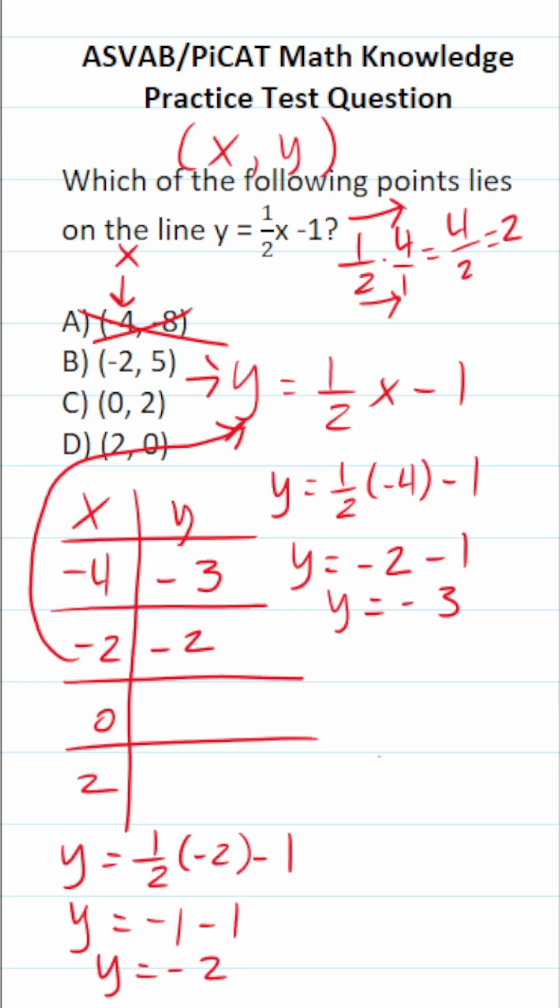This becomes y equals negative 1 minus 1 is negative 2. So this is negative 2, negative 2. Negative 2, negative 2 is a point on the line. Negative 2, 5 is not a point on the line.